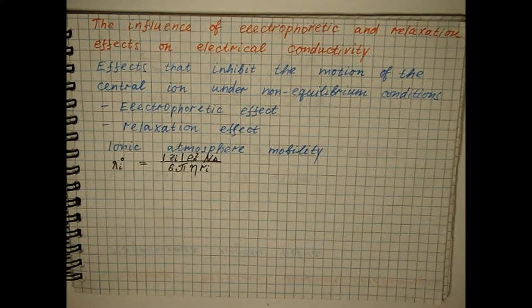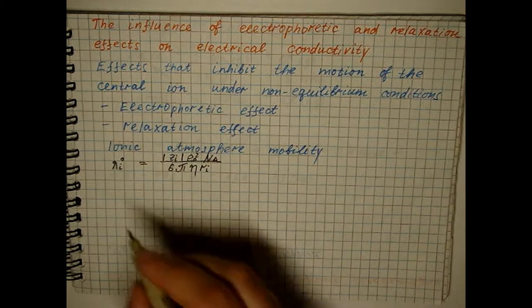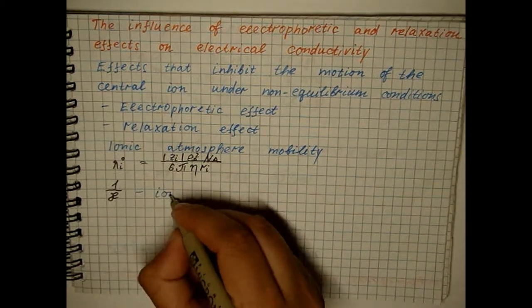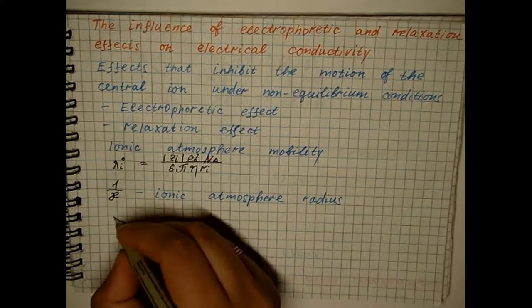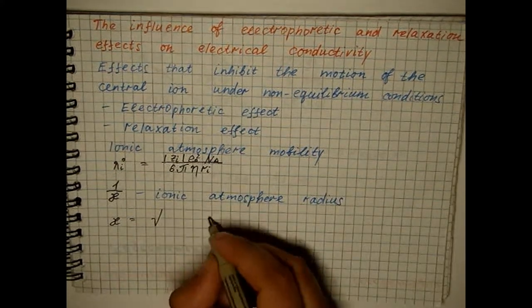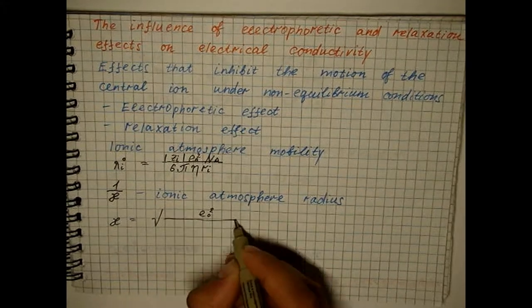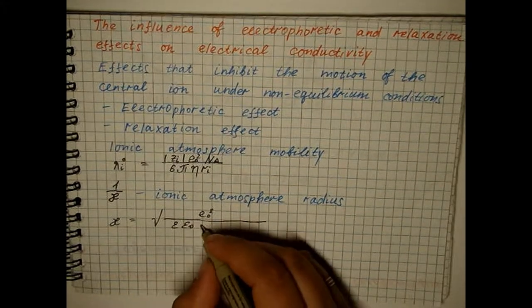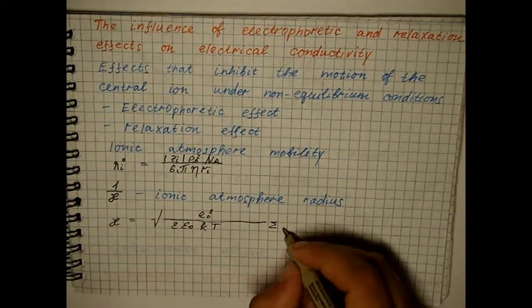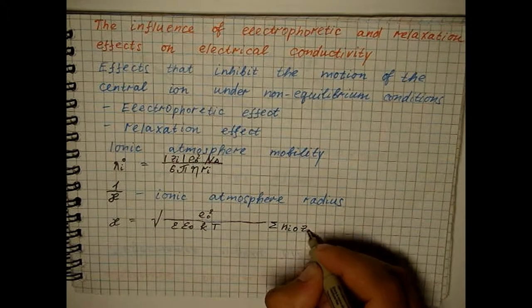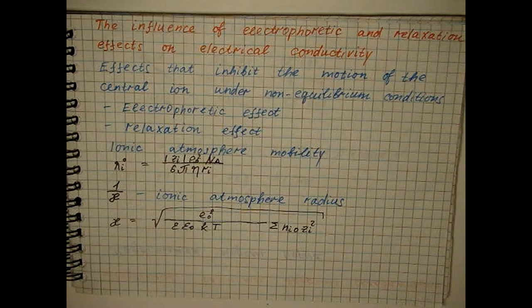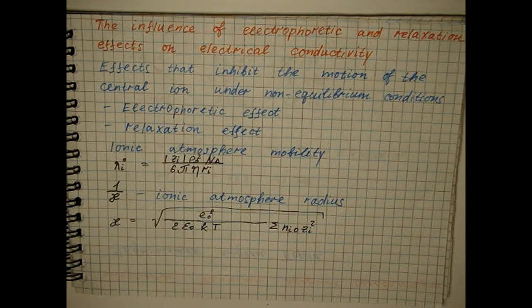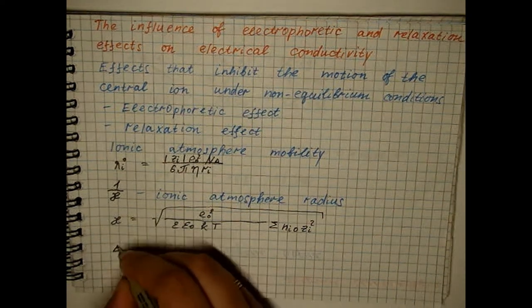If in this formula we substitute the radius of the ionic atmosphere, thus, for the electrophoretic effect in a solution of a monovalent electrolyte, we get the result.